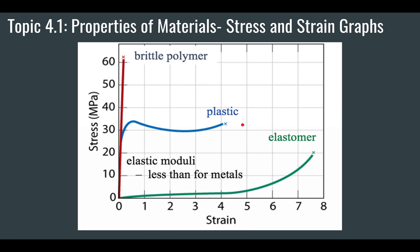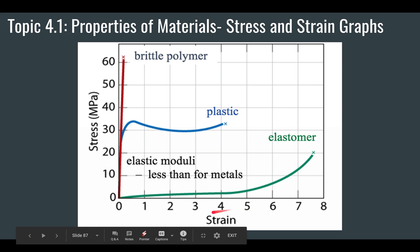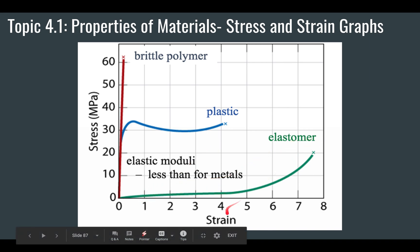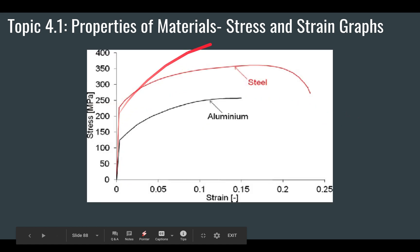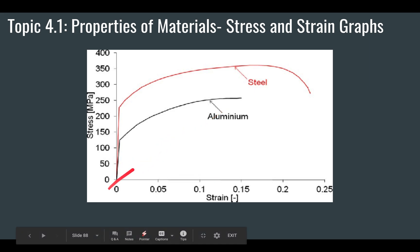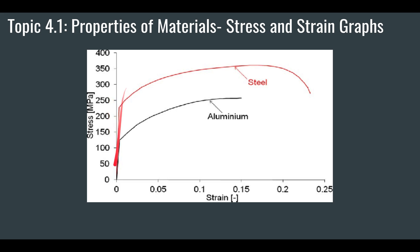Here are some examples of stress-strain graphs for different materials. A brittle polymer can handle a lot of stress but very little strain. A plastic handles stress less well but tolerates more strain. An elastomer handles stress even less but handles strain very well. For steel and aluminum, you can see their curves compared directly. A steeper slope indicates a higher Young's modulus and less strain before becoming plastic, while a shallower slope means the material is much more elastic.